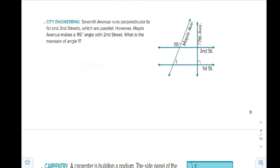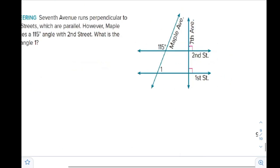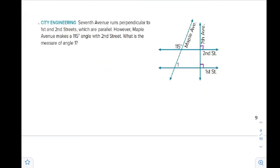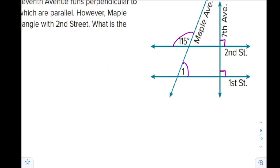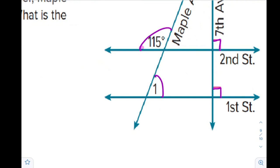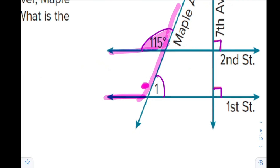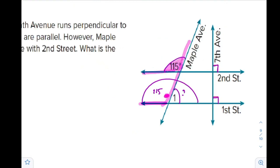Another example: 7th Avenue runs perpendicular to 1st and 2nd Street, shown as right angles — and these streets are parallel. Maple Avenue makes a 115-degree angle with 2nd Street. The corresponding angle at 1st Street is also 115 degrees using the F-letter pattern. Angle 1 and 115 degrees form a linear pair, so measure of angle 1 is 180 minus 115, which is 65 degrees.